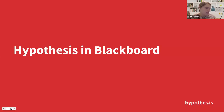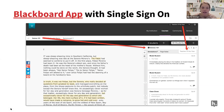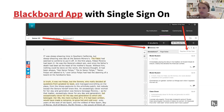Let's talk specifically about Hypothesis and Blackboard. The great thing about Hypothesis in Blackboard is all you as an instructor have to do is create a Hypothesis-enabled reading in your course. You don't have to create accounts for students; students don't have to create accounts for themselves. They're automatically annotating based on the course they're in. And now with the Blackboard groups integration, they also have the ability to annotate in smaller groups within their course.